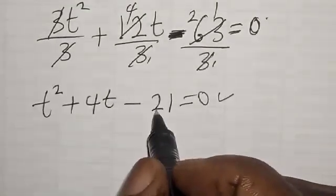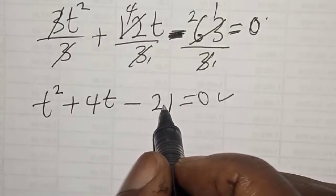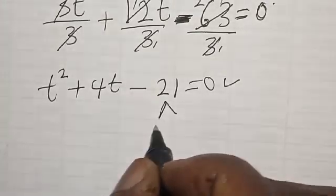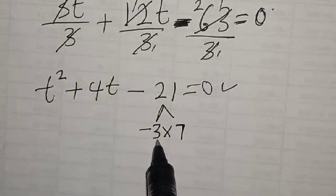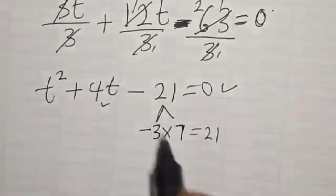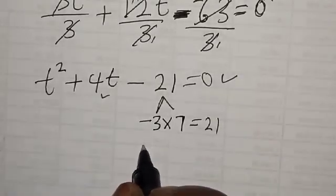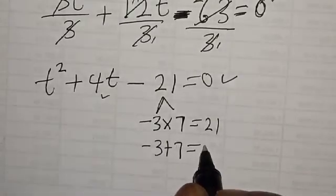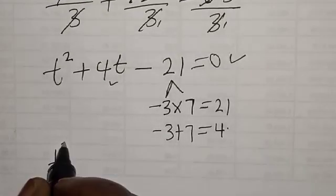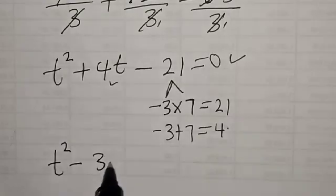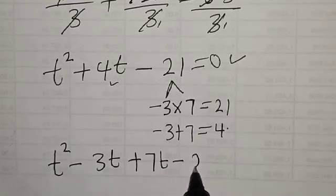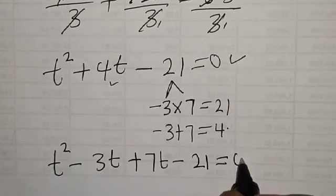We are looking for two numbers such that their product gives minus 21 and their sum gives plus 4. That is: minus 3 multiplied by 7 equals minus 21, and minus 3 plus 7 equals 4. Therefore, we have t squared minus 3t plus 7t minus 21 is equal to 0.